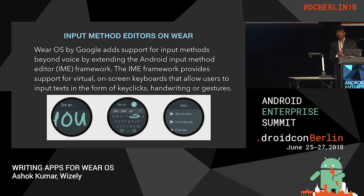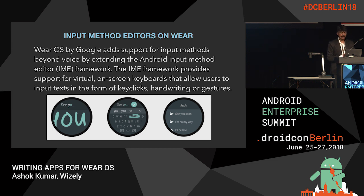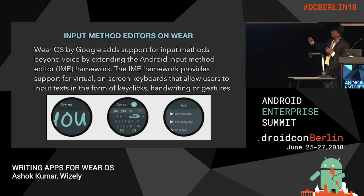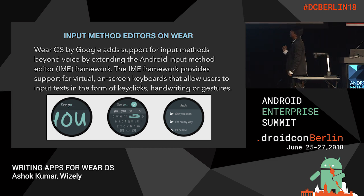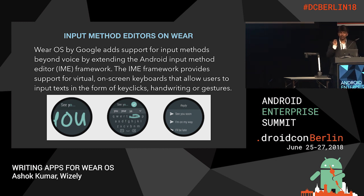Wear 2.0 comes with IMF — input method framework — which has IME, the Android input method editor, by default from the operating system itself. If you have an edit text component, the keyboard pops out automatically, with swipe gesture, voice-based input, and quick chips that allow you to choose quick replies.